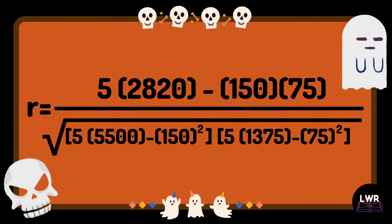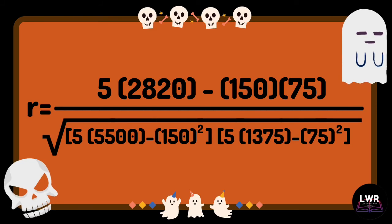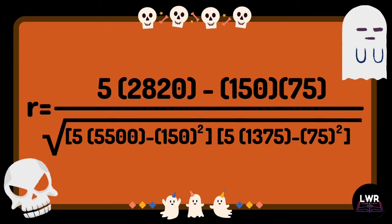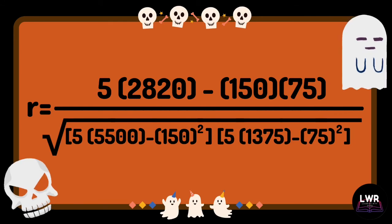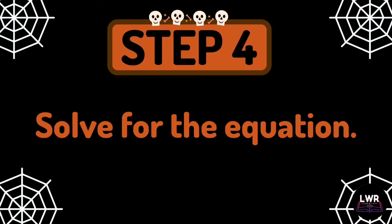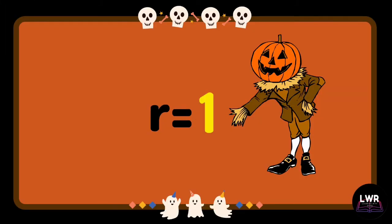Times the quantity of 5 times 1,375 minus 75 raised to 2. Moving on, we have step number 4: solve for the equation. The final answer is r is equal to 1.